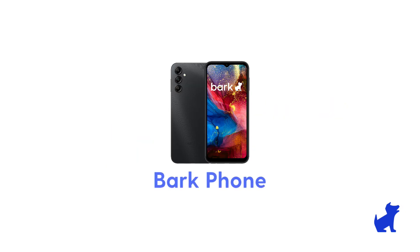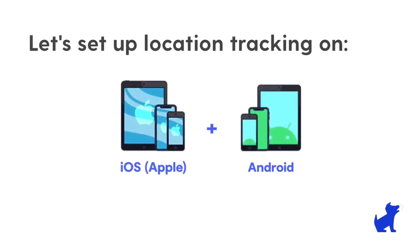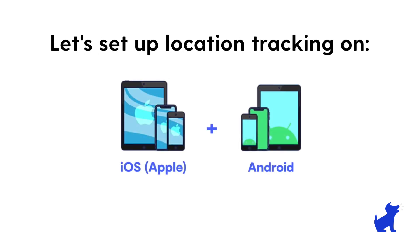If your kid has a BARK phone, location tracking already comes set up. But if your kid has an Android or an iPhone, I'll show you what to do on your kid's device to make sure location tracking is set up.